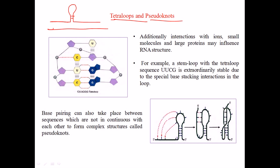But except for this hydrogen bonding, the presence of cytosine, uracil, and guanine in this kind of orientation results in base stacking interactions, as shown in this picture between these bases. So uracil, cytosine, and guanine base stacking interactions are really, really strong. This base stacking interaction between U, C, G is extraordinarily stable due to the spatial base stacking interaction loop formed. That's why the presence of this kind of tetraloop structure is really important.